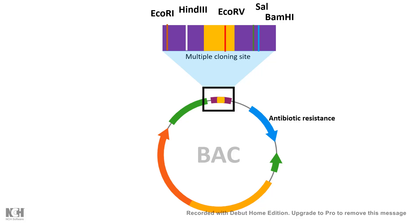There is an antibiotic resistance gene, which works as a selectable marker. This allows us to ensure that only bacteria which take up the BAC plasmid would grow, because we grow the bacteria in an antibiotic-containing solution. Only bacteria carrying the antibiotic resistance gene can survive, so bacteria which have not taken up any plasmid would die.